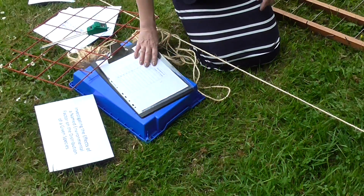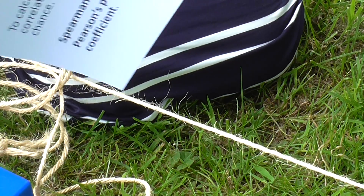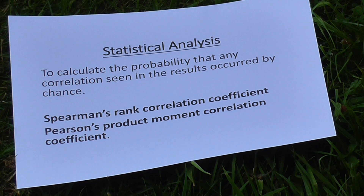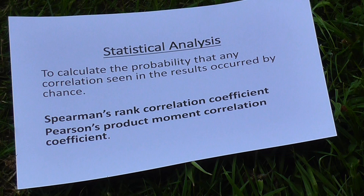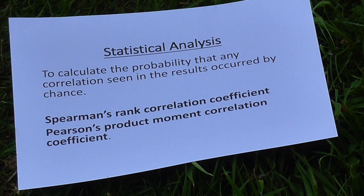Once you've collected your data, the obvious thing to do is draw a scattergraph of your results, which may show some kind of correlation. However, that's not good enough for scientists — we have to carry out statistical analysis, which calculates the probability that any correlation we see has occurred by chance. If there's a high probability it occurred by chance, there's no real correlation. Because we are investigating a correlation between two variables, we would carry out a Spearman's rank correlation coefficient or a Pearson's product moment correlation coefficient. You will not have to carry these out in the exam, but you should be able to choose which test to apply to various environmental investigations.